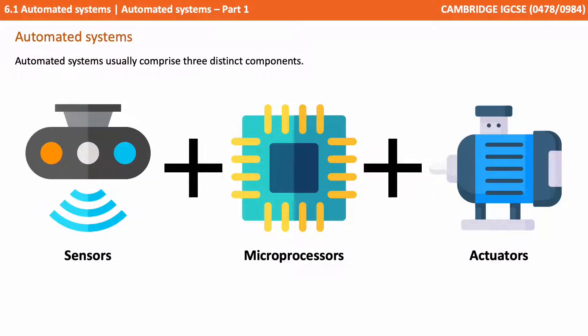Automated systems usually comprise three distinct components: sensors, microprocessors and actuators.